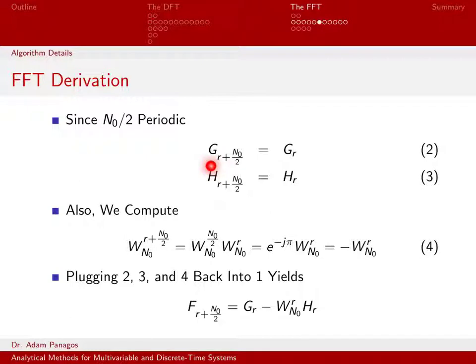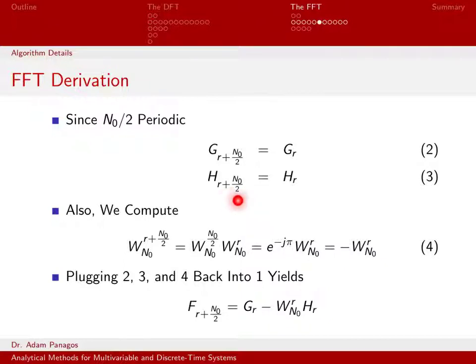That's exactly what it means for this to be n_0/2 periodic. Same thing for h(r): for any fixed value of r, if I add n_0/2 to that value, I get back the exact same value. That's just the definition of being n_0/2 periodic. So we have Equation 2 for g(r) and Equation 3 for h(r).